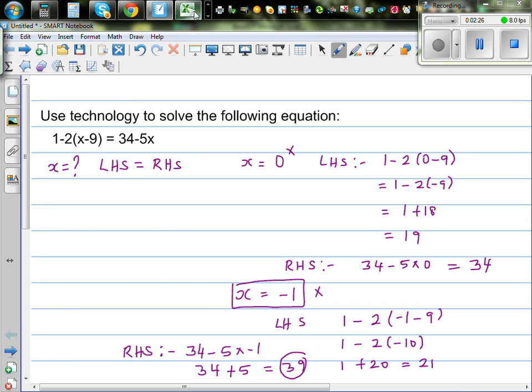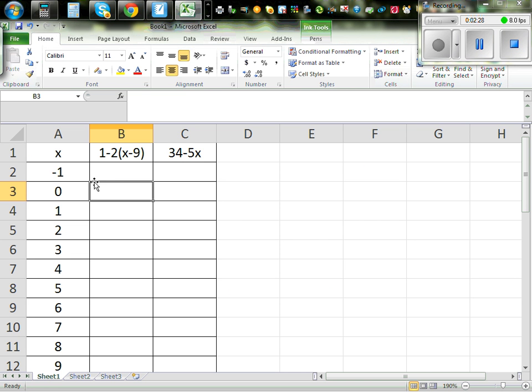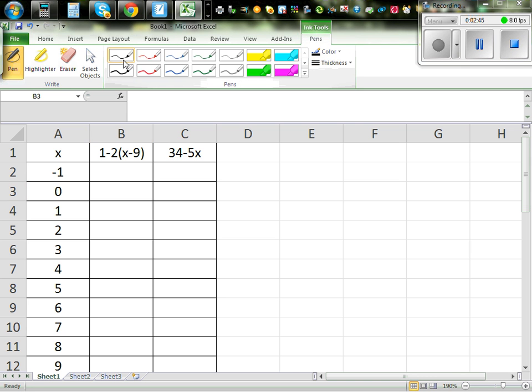So let's start with negative 1. I have in column A different values of x. This is your left hand side, so this is your LHS. And this is your right hand side.